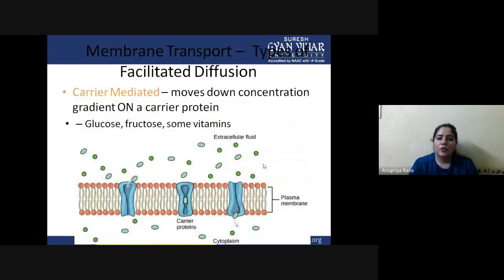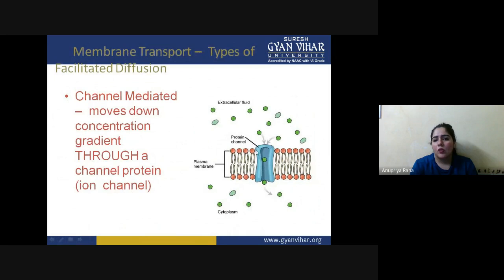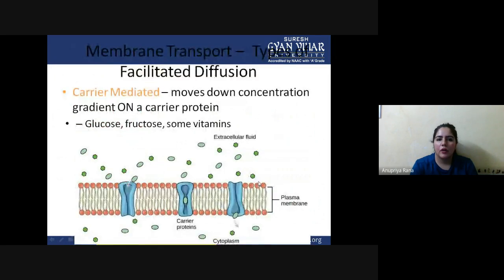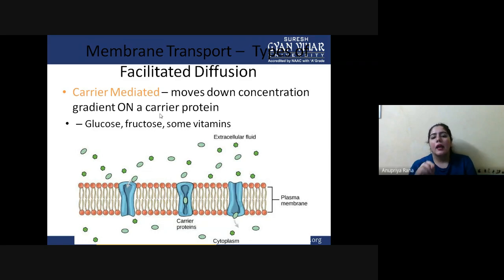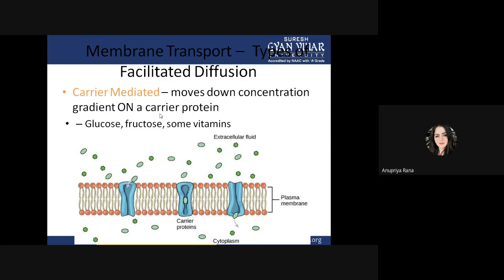Facilitated diffusion has two types: ion channel mediated and carrier mediated. In carrier-mediated diffusion, a carrier protein works on ion concentration — in this case carrying glucose structures and some vitamins inside the cell membrane. Ions are diffused through ion channels, while carrier-mediated transportation uses specific molecule-based material and needs a carrier protein to carry specific things.